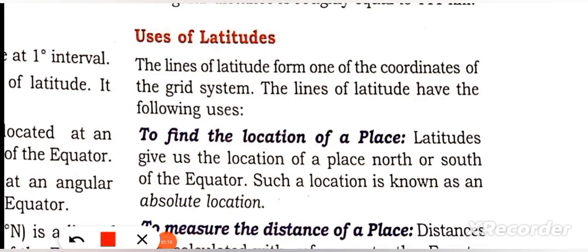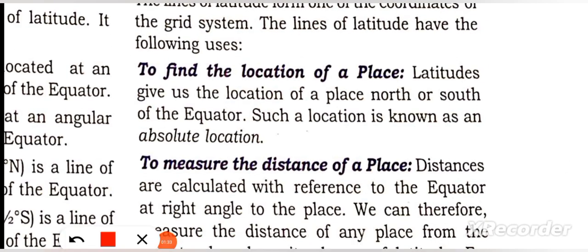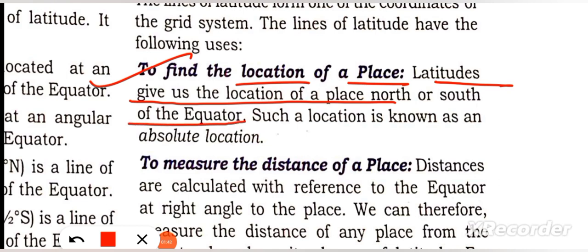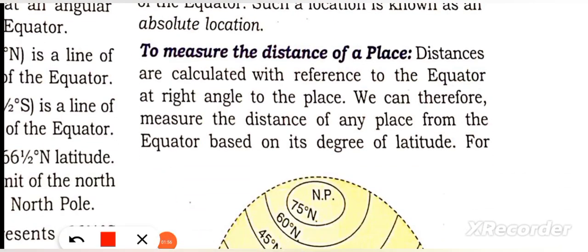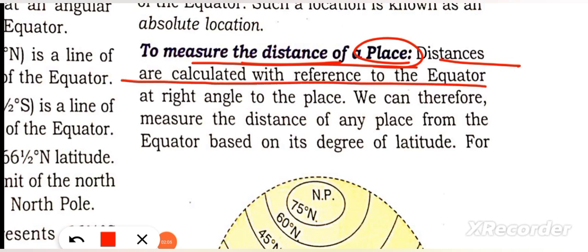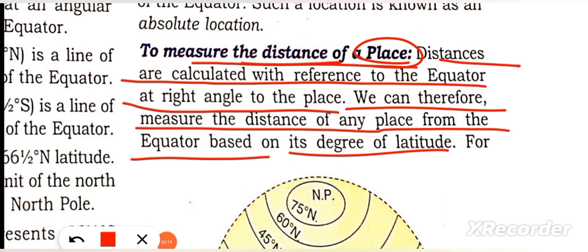Just like x and y coordinates, we work with latitude and longitude. The uses of latitude include: to find the location of a place — north or south of the equator. This is known as absolute location. We can also measure the distance of any place from the equator based on the degree of latitude.